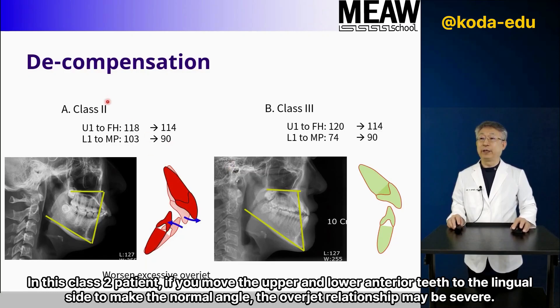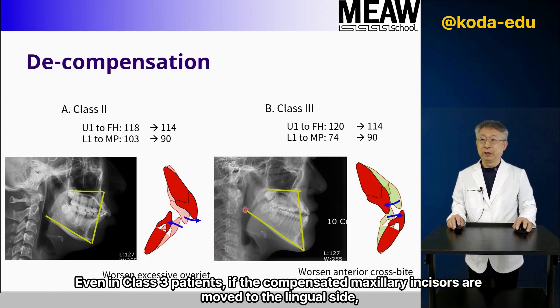In a Class 2 patient, if you move the upper and lower anterior teeth to the lingual side to make the normal angle, the overjet relationship may become more severe.